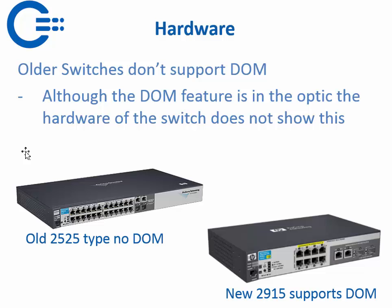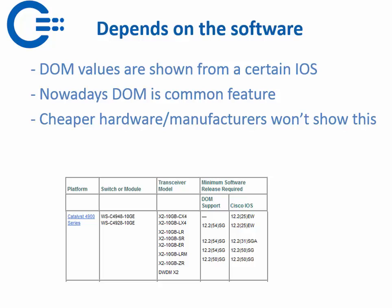Whether a switch or router shows DOM has to do with both the software and the hardware. Our optics have DOM, but for example an older HP switch doesn't support DOM — the newer ones will. So it depends on the hardware as well, and not only the hardware but also the software. For example, this 4948 — DOM is incorporated in later IOS versions. If you are working with IOS 12.2 or 12.1, you cannot see DOM features because it's not incorporated. Nowadays everything typically comes with DOM built into the latest IOS, but if you're running an older IOS, it may not be showing DOM until you update.